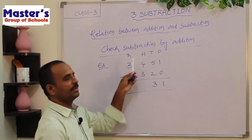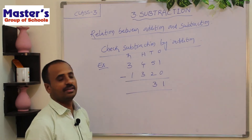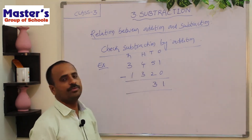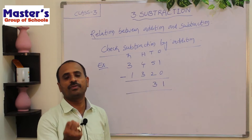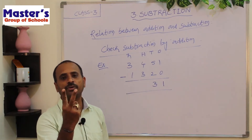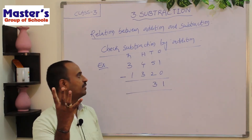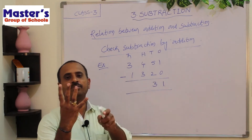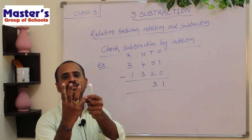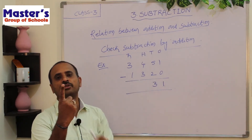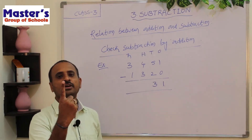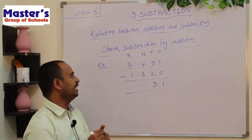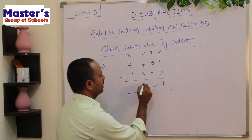Next go to hundreds place. 4 and 3 are the digits. Open 4 fingers, close 3 fingers: 1, 2, 3. There is remaining 1 finger. Write 1 under hundreds place.